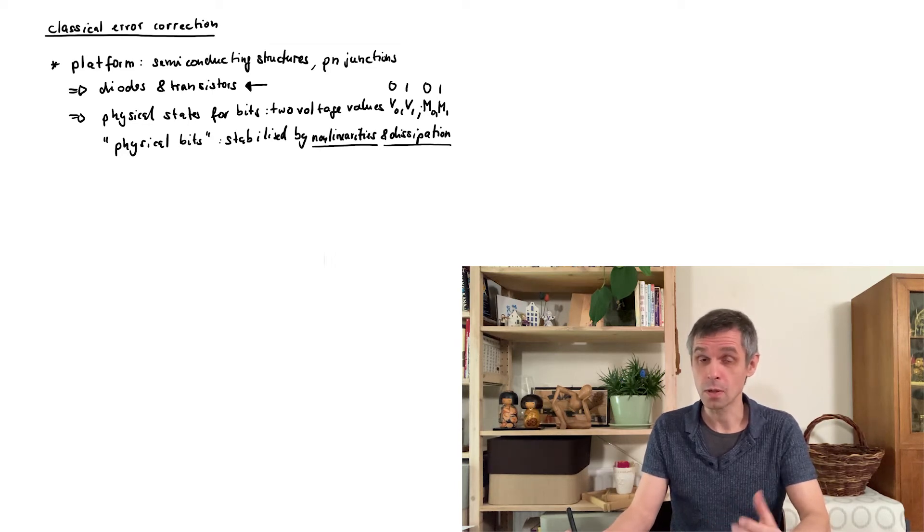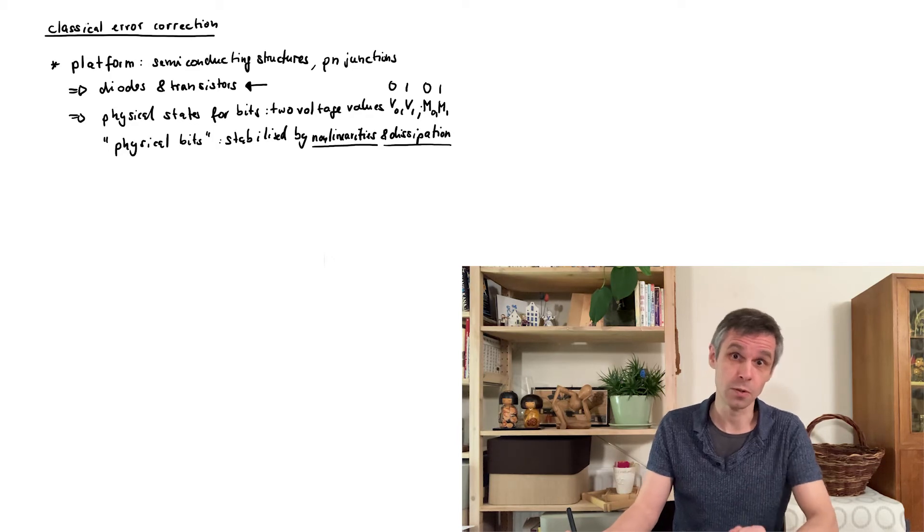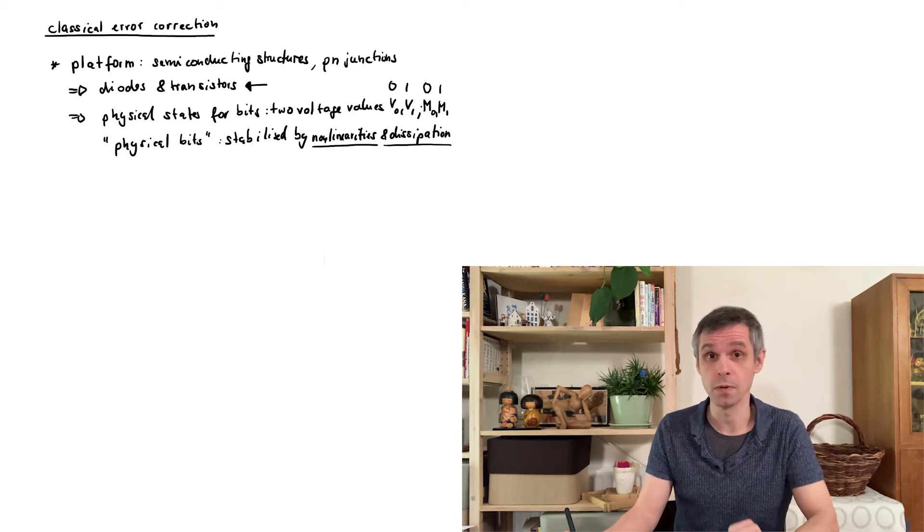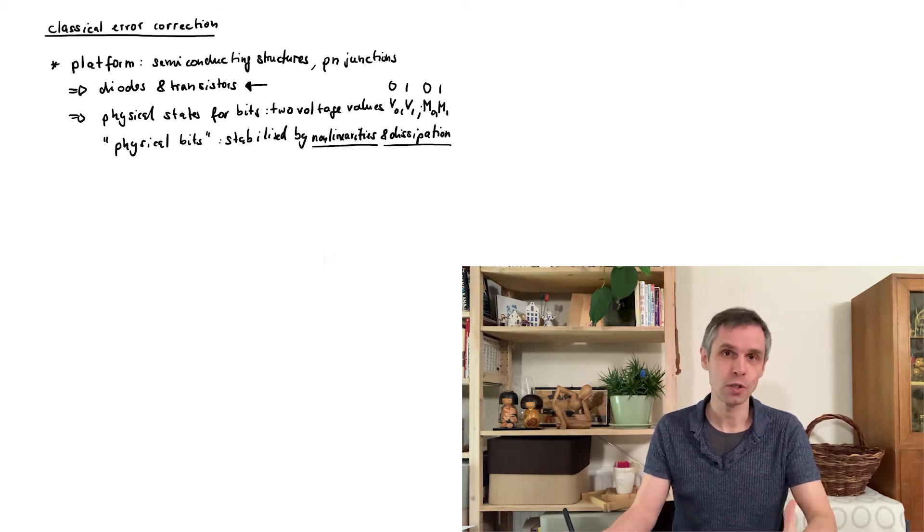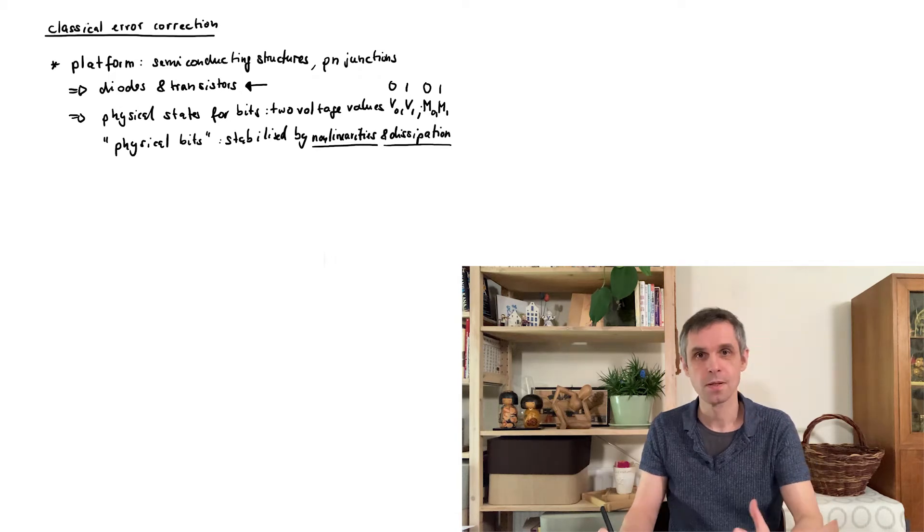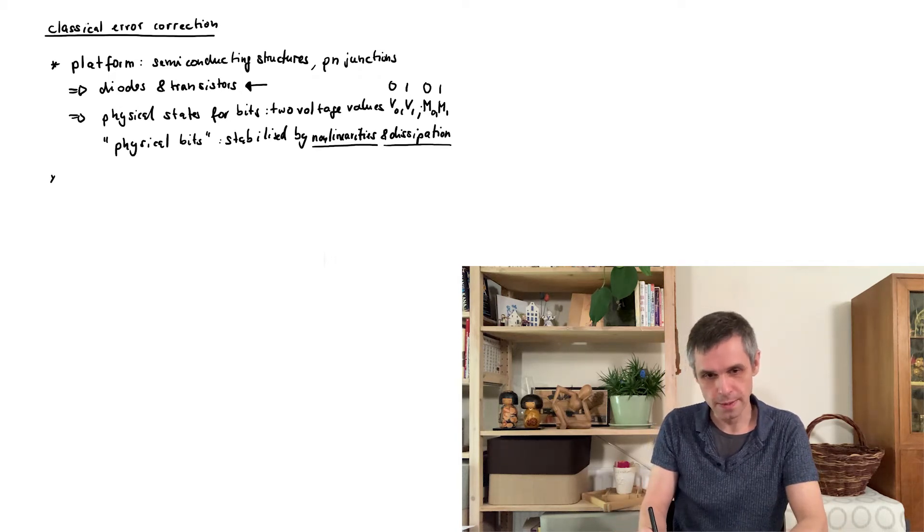For instance during a computation due to a cosmic neutrino that is sort of changing the voltage states of one of these components. And this indeed can occur. Or in communication something might go wrong, for instance you might lose a data package. So let us turn to errors and how we can correct for them.